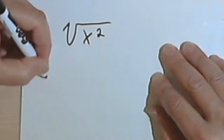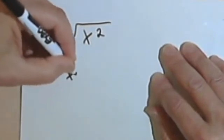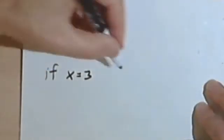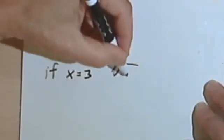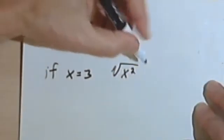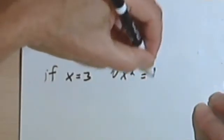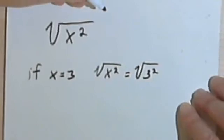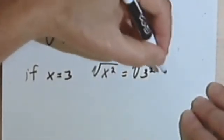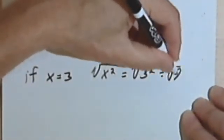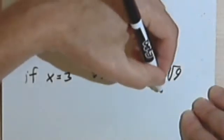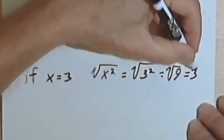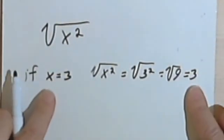Let's say that x equals 3. And let's work through this problem. So that would mean that the square root of x squared would be the same as the square root of 3 squared. And 3 squared is 9. And the square root of 9 is 3. And 3 equals x. So that's fine.